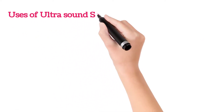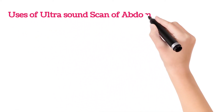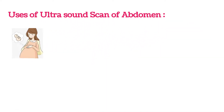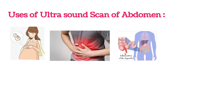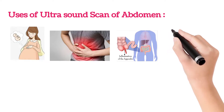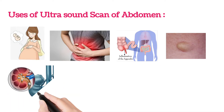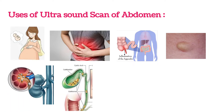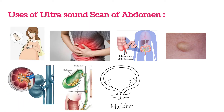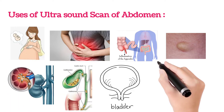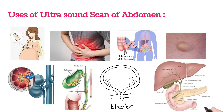In what conditions is an ultrasound scan advised? In people with pregnancy to evaluate baby growth, abdominal pain, appendicitis, cysts and tumour, kidney stones, gallbladder stones, bladder stones, fatty liver, liver and pancreas problems — an ultrasound abdomen scan is suggested.